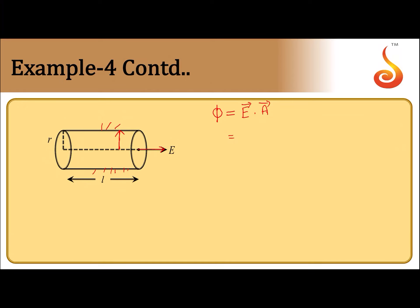The area vector for this curved surface will be normal to the axis. At any point, it will be normal to the axis. So the angle between E and A will be equal to 90°.